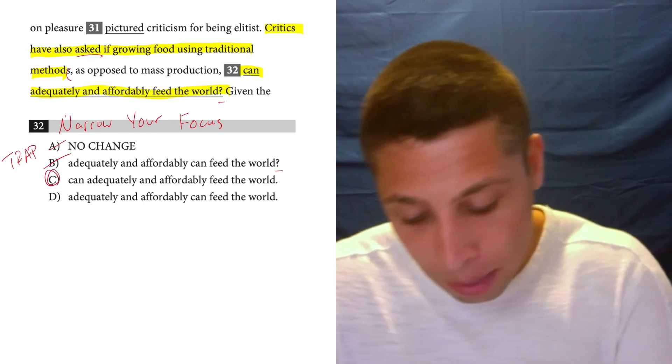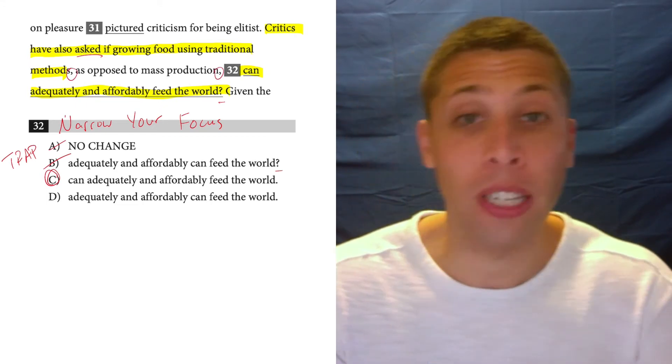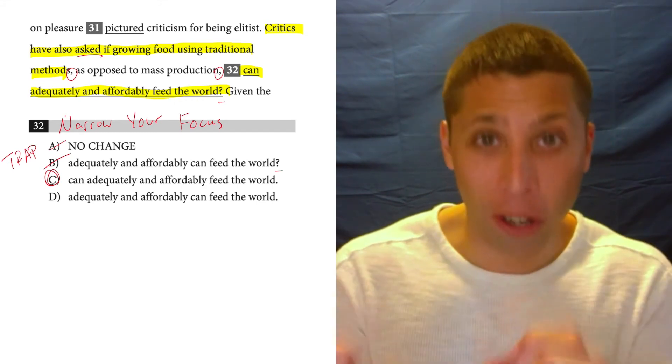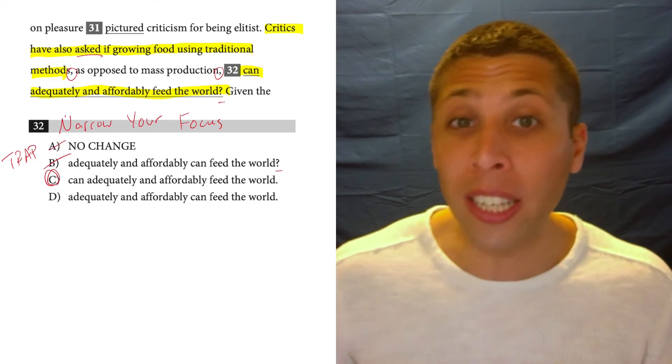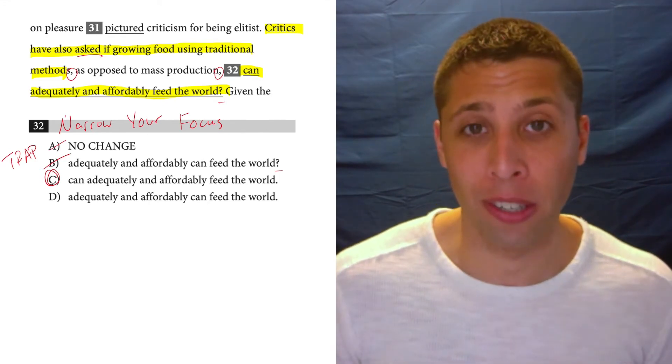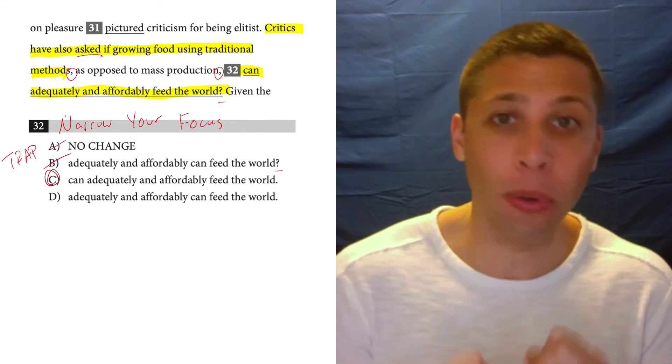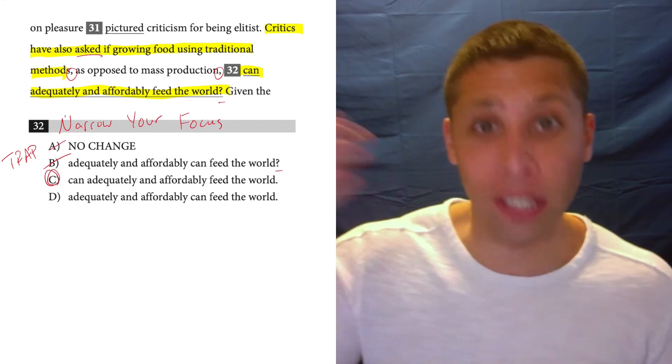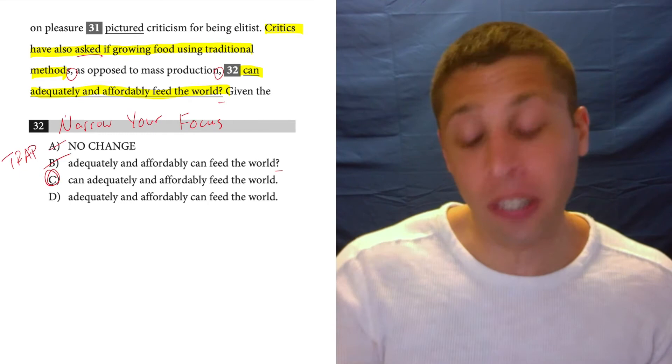Those two commas are telling me this is a bit of an interruption, so for the purposes of trying to understand what the heart of the sentence is, you can read the sentence without the interruption, condense it, get it down to its more fundamental pieces. And then hopefully that will let your instincts take over and hear that C is the right answer.